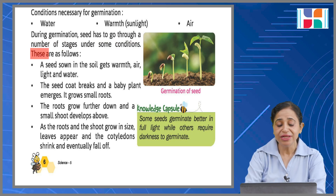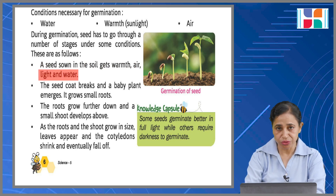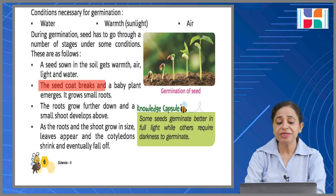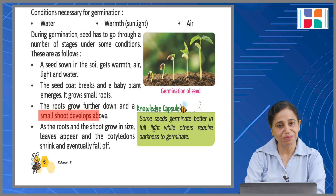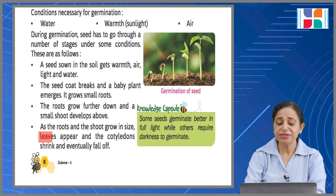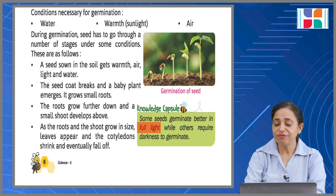A seed sown in the soil gets warmth, air, light, and water. The seed coat breaks and a baby plant emerges, growing small roots. The roots grow further down and a small shoot develops above. As the roots and shoot grow in size, leaves appear and the cotyledons shrink and eventually fall off. Knowledge capsule: some seeds germinate better in full light while others require darkness to germinate.